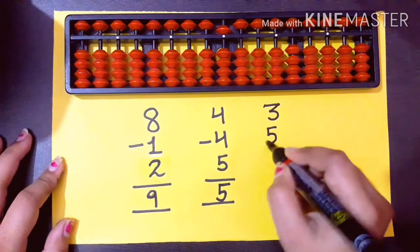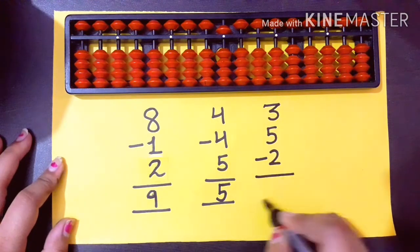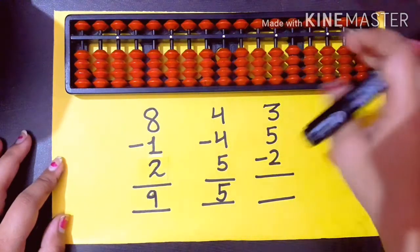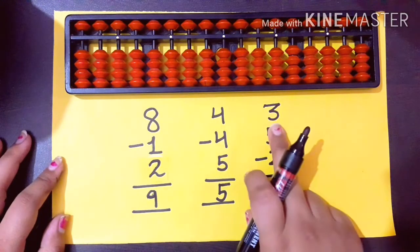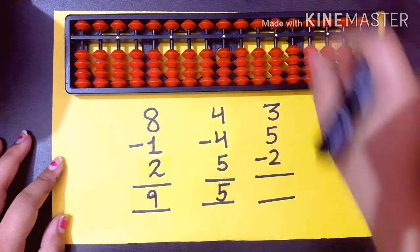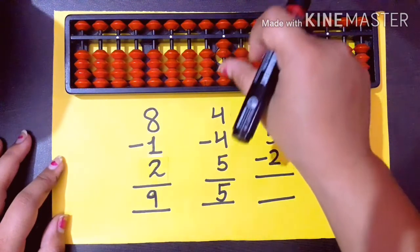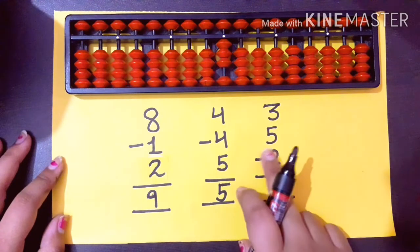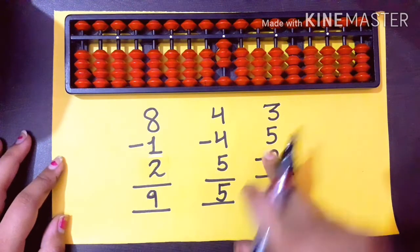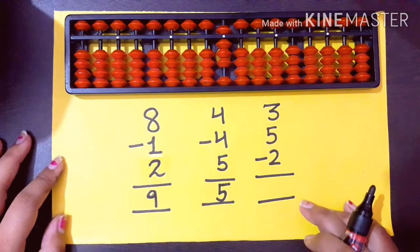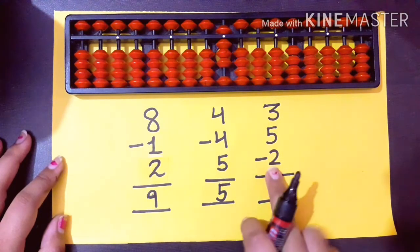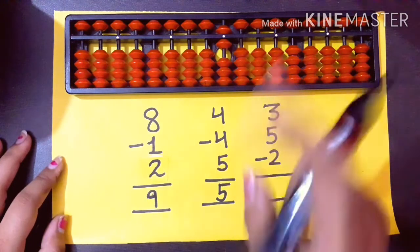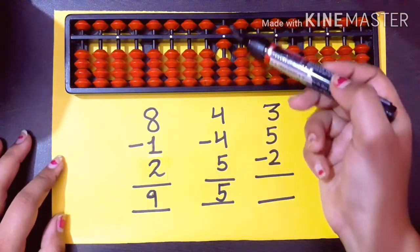One more question: 3 plus 5 minus 2. Set your abacus again — upper beads up, lower beads down. First of all you have to add 3 — 1, 2, 3. Then you have to add 5 — put the upper bead down. Then you have to do minus 2 — 1, 2. What is your answer? 5, 6. Answer is 6.